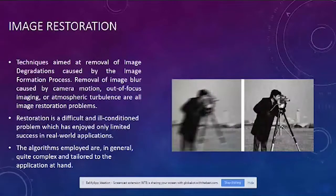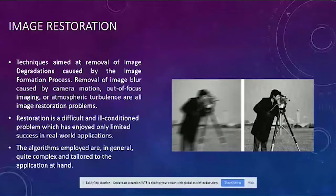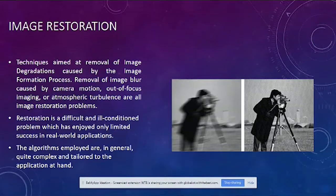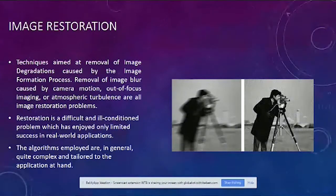Image restoration is a technique used for removing image degradation that happened while clicking the image. We are able to remove blur caused by camera motion or out-of-focus imaging. Some operations can be easily restored, but restoration is a very difficult and ill-conditioned problem, and the algorithms employed are complex and tailored to the application. By local averaging of pixels, we were able to reconstruct the right picture compared to the blurred original.